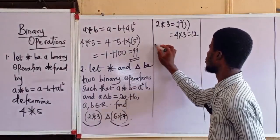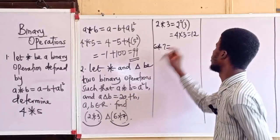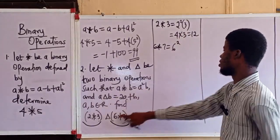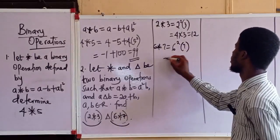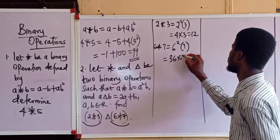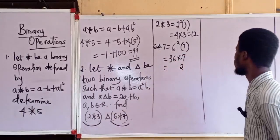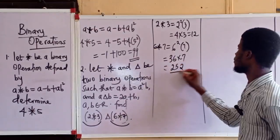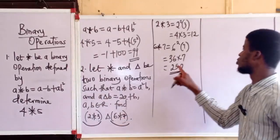What is 6 operation 7? Using the same rule of combination, we have 6 to the power of 2 — since a is 6 and b is 7 — times 7. 6 to the power of 2 is 36, times 7. So 7 times 6 is 42, put down 2 carry 4, that gives 252. So 6 operation 7 is 252.